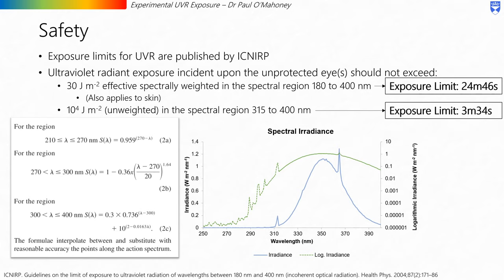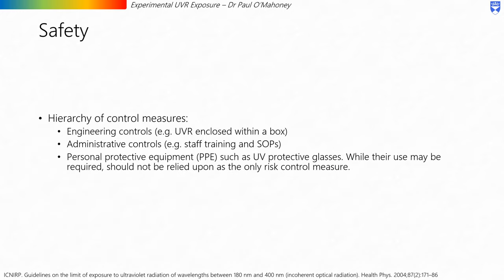The time presented here is the maximum exposure duration in an eight-hour period. This is of course a limit and all reasonable measures should be taken to reduce unnecessary UVR exposure. All UVR sources should initially be checked through non-UVR outputs and should be risk assessed accordingly. In the hierarchy of control measures, engineering controls are the preferred option and include the UVR being enclosed within a box or an interlock on the lab. Administrative controls can be put in place, including staff training and SOPs. Lastly, personal protective equipment such as UV protective glasses may be required, but should not be relied on as the only risk control measure.